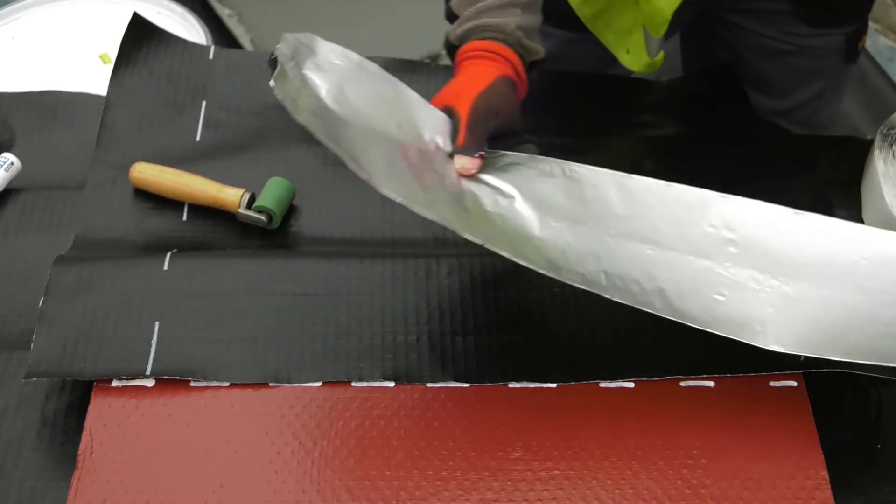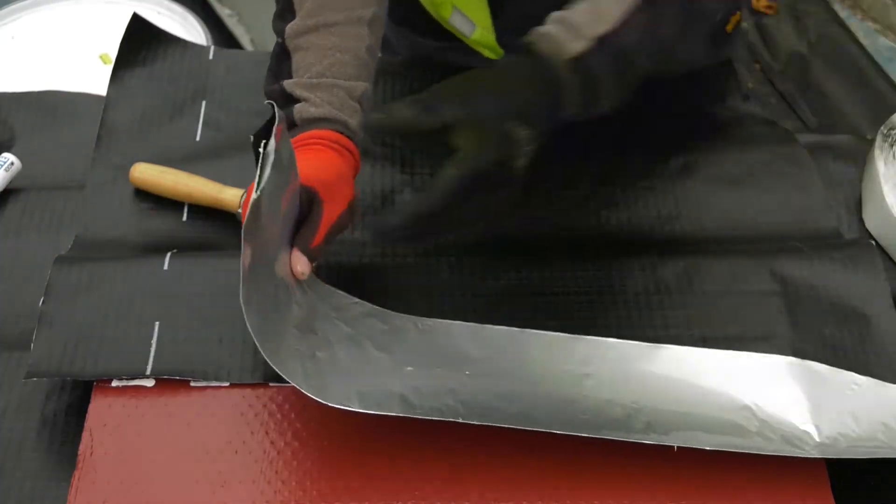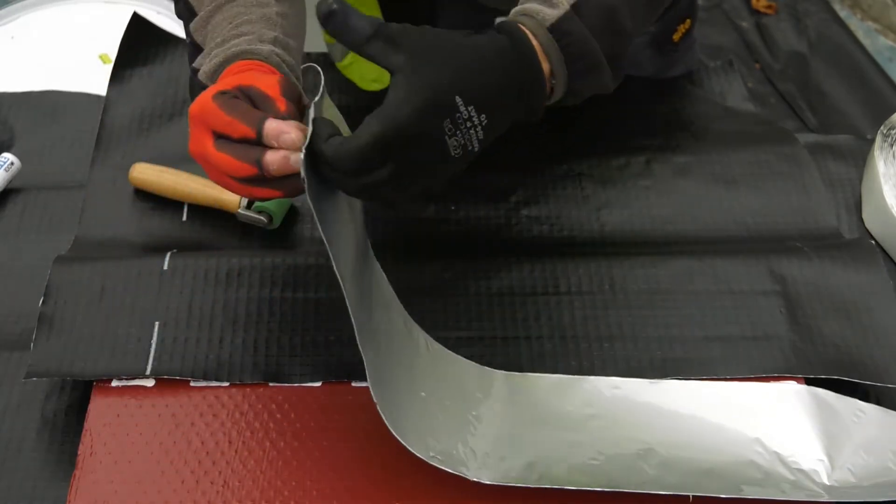Once checked and to minimise risk of the joint being damaged, apply the Memtec Gas Over Tape 150 over the joint.